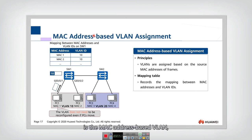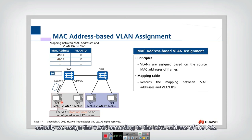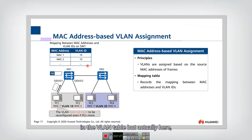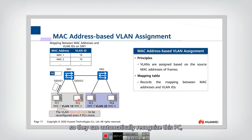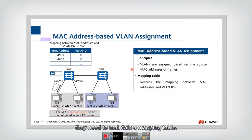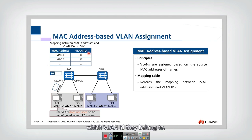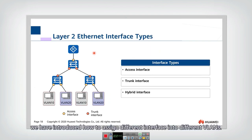Another commonly used method is MAC address-based VLAN assignment. Here, VLANs are assigned according to the MAC address of the PCs, which are entered into a VLAN table. The advantage is that if we move a PC from one port to another, we don't need to reconfigure the VLAN ID, because the MAC address doesn't change — the switch automatically recognizes the PC and knows which VLAN it belongs to. The disadvantage is that a mapping table must be maintained, storing which VLAN ID each MAC address belongs to.